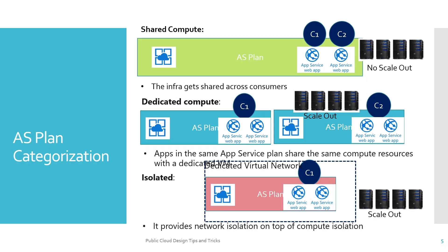The most important part is App Service Plan categorization. Predominantly there are three categories: Shared Compute, Dedicated Compute, and Isolated Compute.